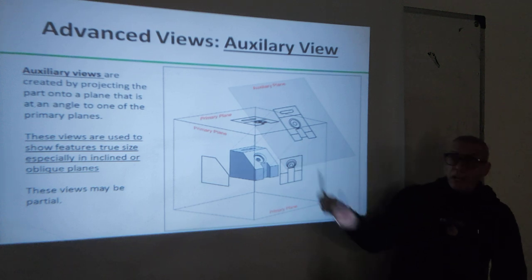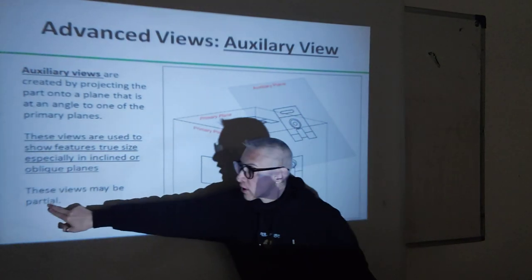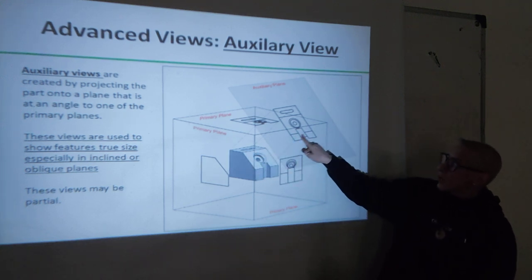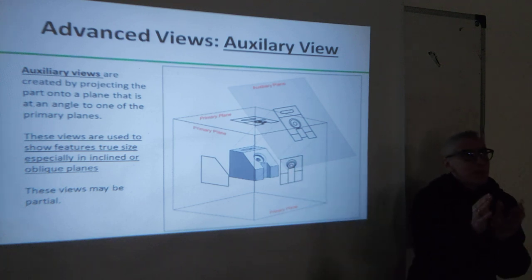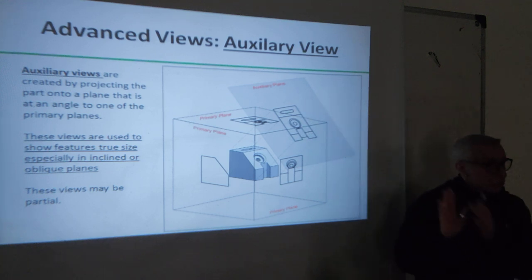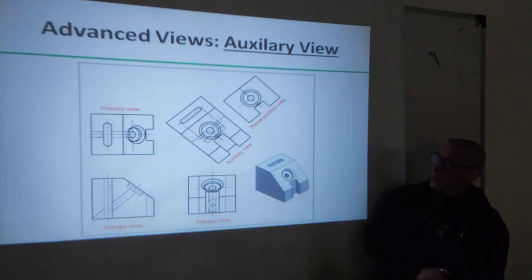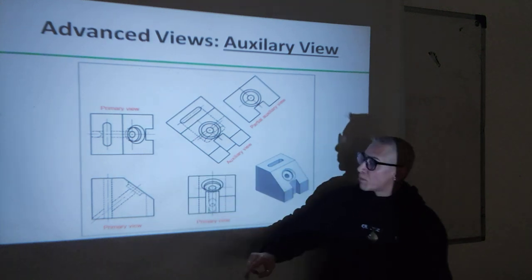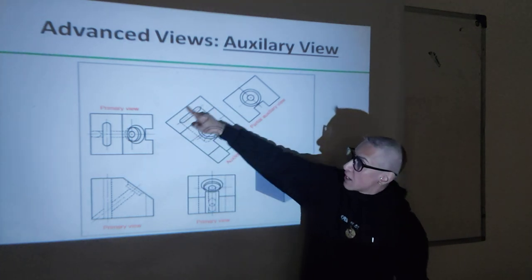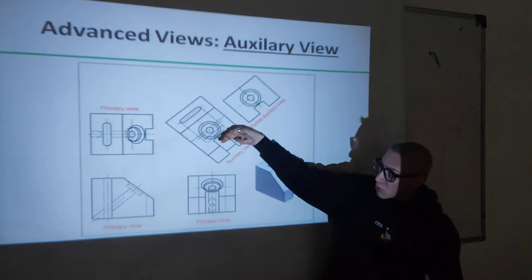The auxiliary views can show the whole object from this view, or they can be partial. That means if I'm interested only in this surface, I don't have to draw all of the other parts. I can just draw this area to show the measurement of this. So it can be a partial view like this. This is the same object - from side, top - and then from here, the inclined surface, we took it at 90 degrees to show the auxiliary view. This is a full auxiliary view from this side.